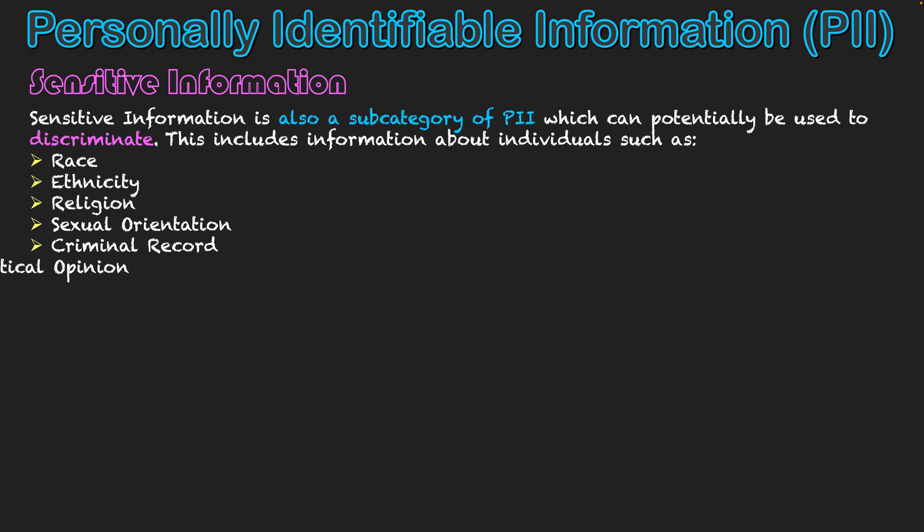There is one last category: sensitive information. Sensitive information is a subcategory of PII and is potentially used to discriminate. It is individual data, but it can be used not just for cybercrime — sometimes people are targeted for these characteristics as well. This includes things such as race, ethnicity, religion, sexual orientation, criminal record, or political opinion. It can be used to categorize people. We can pretend to be someone and commit cybercrime with it, but we can also target people with it — for discrimination, but also these days for targeted advertising through social media and websites, where they target opinions at you because they know this data about you. So this sensitive information category is an element of PII, but it also stands as its own concern.